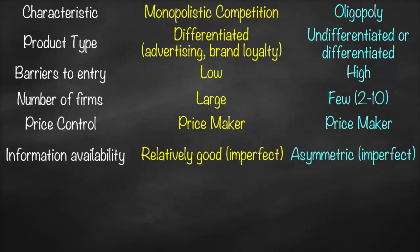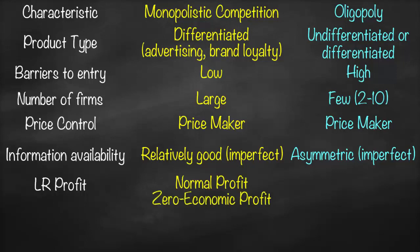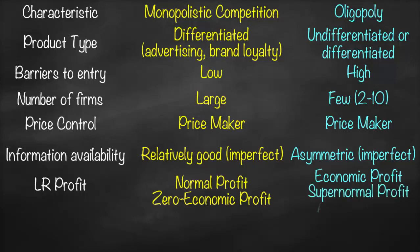For oligopoly, we have asymmetric information, which means imperfect information. The long-run profit for monopolistic competition is normal profit, which we call zero economic profit, while for oligopoly it is economic profit, which we call super normal or abnormal profit.